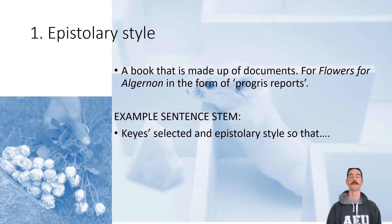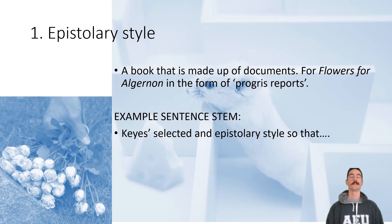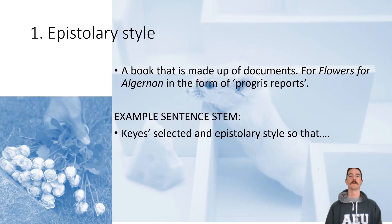The first thing is epistolary style, which is basically a text made up of lots of different documents. In this case it's a progress report, and that in itself is a very interesting device — having the documents actually presented. Your task is to finish off the sentence: 'Keyes selected an epistolary style not only... so that...' — then explain what you think his purpose was in doing so.